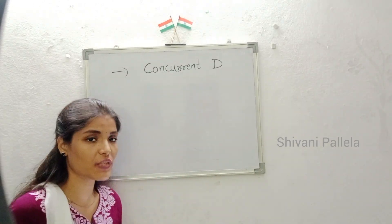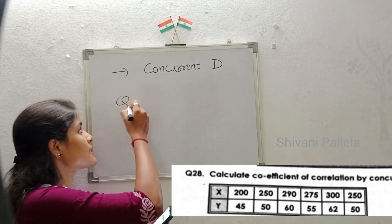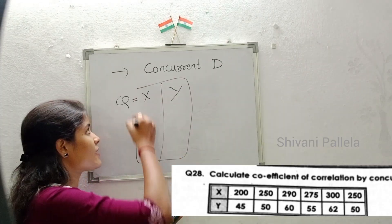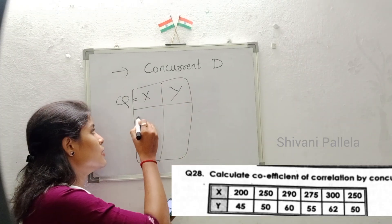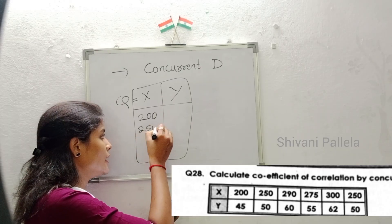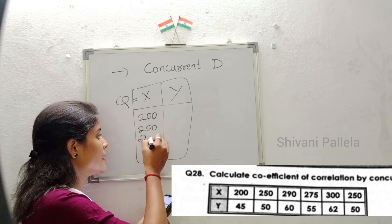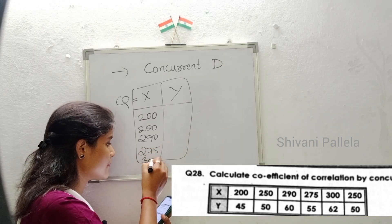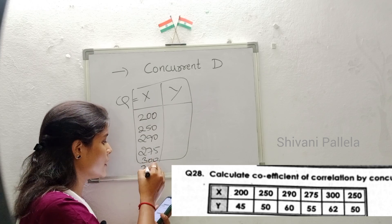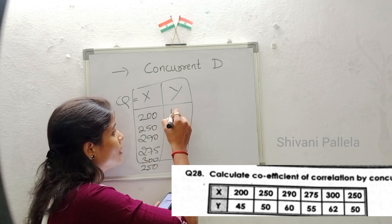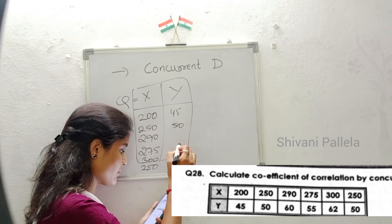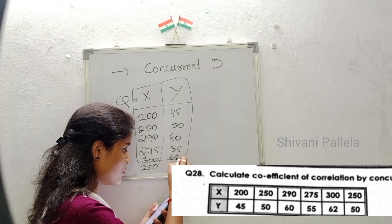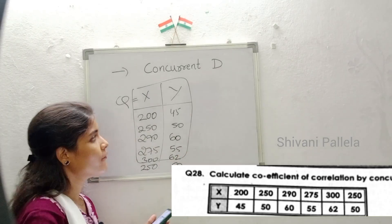Now we are discussing the examination question. The question gives X and Y values. X values are: 200, 250, 290, 275, 300, and 250. Y values are: 45, 50, 60, 55, 62, and 50.